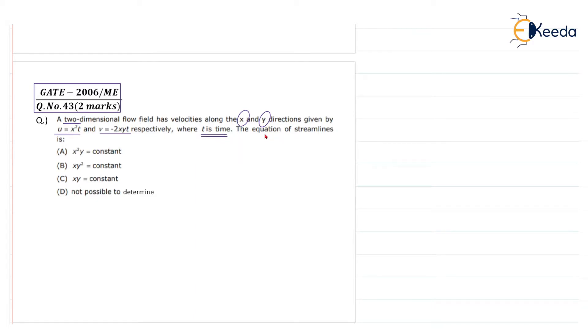The question is to find the equation of streamline. Four options are given: a, b, c, d.